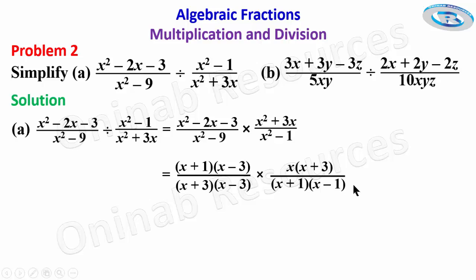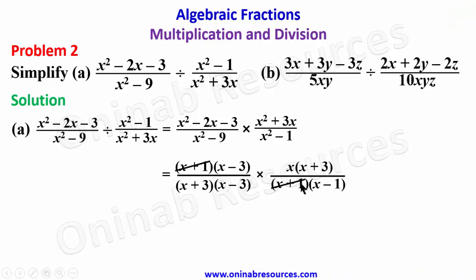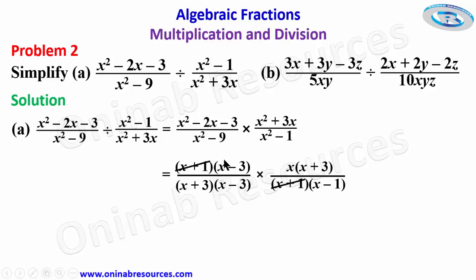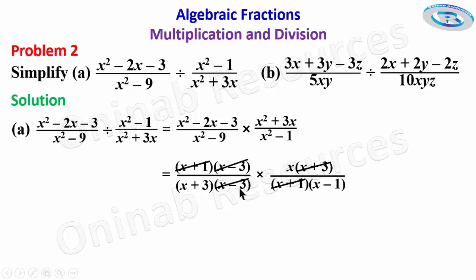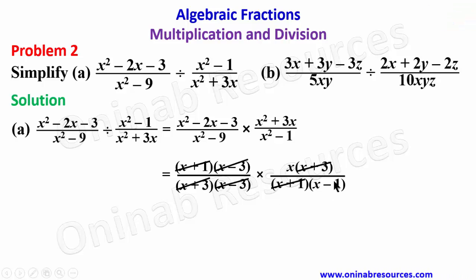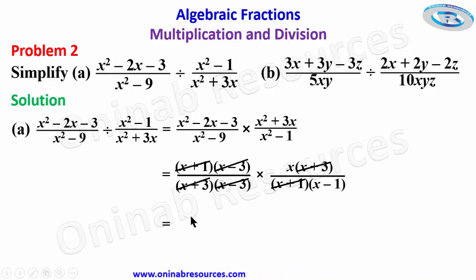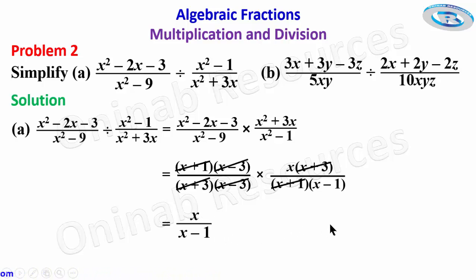For x squared minus 1, this is also a difference of two squares since 1 is 1 squared, giving x plus 1 into x minus 1. We now look at what cancels: x plus 1 cancels with x plus 1, x minus 3 cancels with x minus 3, and x plus 3 cancels with x plus 3. We are left with x at the numerator and x minus 1 at the denominator, so the final solution to problem 2a is x over x minus 1.